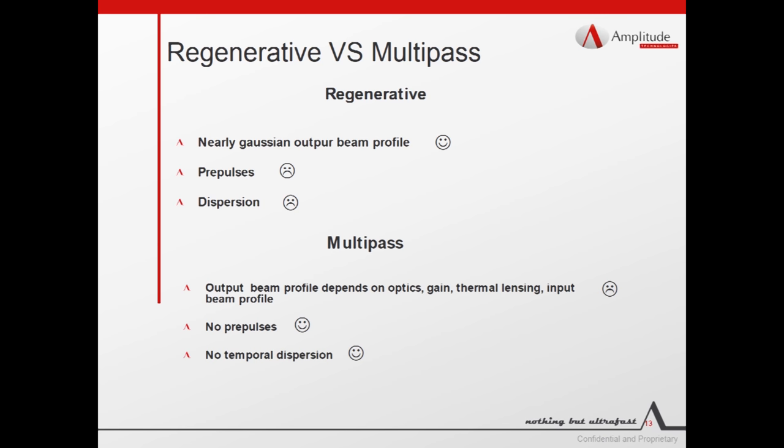A multi-pass amplifier limits the prepulses to the leakage from intracavity polarizer. Moreover, since there is no need for Pockels switching in a multi-pass amplifier, it is possible to reduce the pulse path through optical materials. This leads to less temporal dispersion. On the other hand, the output beam quality depends on the input beam profile, the optics in the amplifier, the gain profile and the thermal lenses. Moreover, the design could lead to astigmatism if curved mirrors are not used at normal incidence.